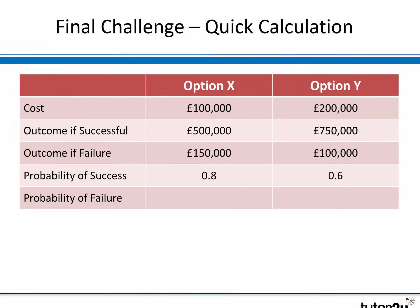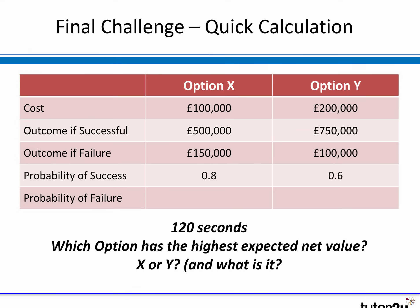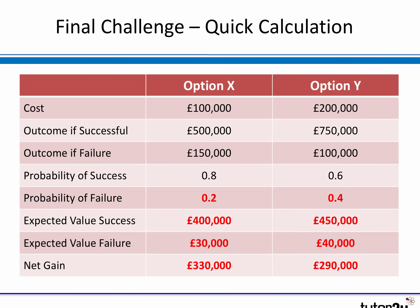On screen there is one final calculation to have a go at if you want more practice. For option X and option Y, some information is given and there's one more calculation to complete. Don't forget the sum of probabilities should add up to one — I haven't given you the probability of failure for either option X or option Y, so work those out first. Option X had a probability of failure of 0.2, option Y of 0.4. Working through the expected values, option X had a net gain of £330,000 and option Y £290,000, so option X appears to be the best option.